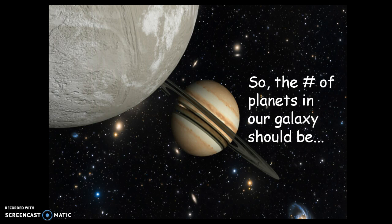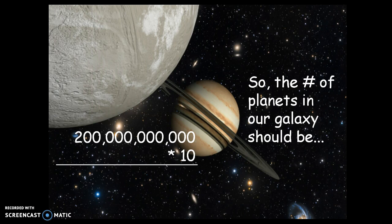So how do you figure out the number of planets in our galaxy? You take 200 billion and multiply it by ten, because you want ten planets for each of those stars. The nice thing about ten is you don't really need a calculator — any number times ten, you just add a zero. So the total number of planets we estimate in the Milky Way galaxy would be two trillion.